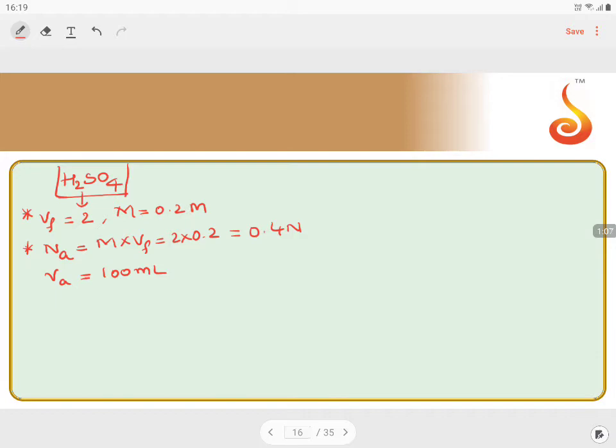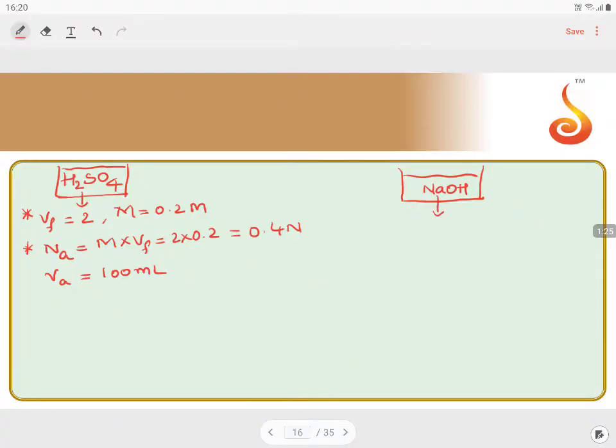Let us take this is the solution, solution number 1. So solution number 2. If I am taking solution number 2, this is made of NaOH solution. In NaOH solution, we have valency factor is equals to 1, and molarity is equals to 0.2 molar. That means your normality of this base will be equals to molarity into valency factor, which is equals to 0.2. And what is the volume of the base given is 100 ml.